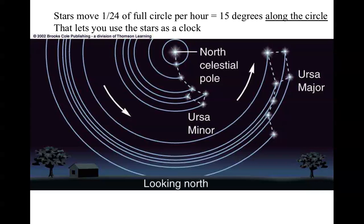Stars make 1/24th of a full circle every hour. That's 15 degrees along that circle that they make around the north star. This is what lets you use the stars as a clock. If you know the sky very well, you can watch the positions of the stars, and you can essentially use them to keep time, because you know they take 24 hours to go around the sky.